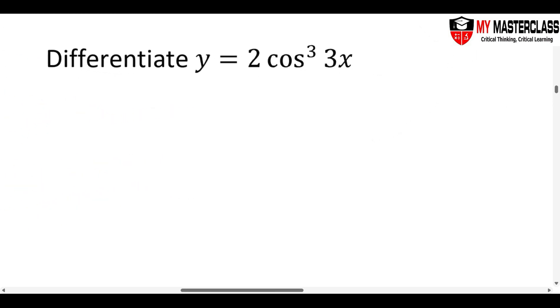2 cosine cube 3x. Same thing. When I do dy dx, what happens? Power bring down. 2 times 3, 6. Cosine square. Because this is a chain rule, my chain still remains the same, 3x.